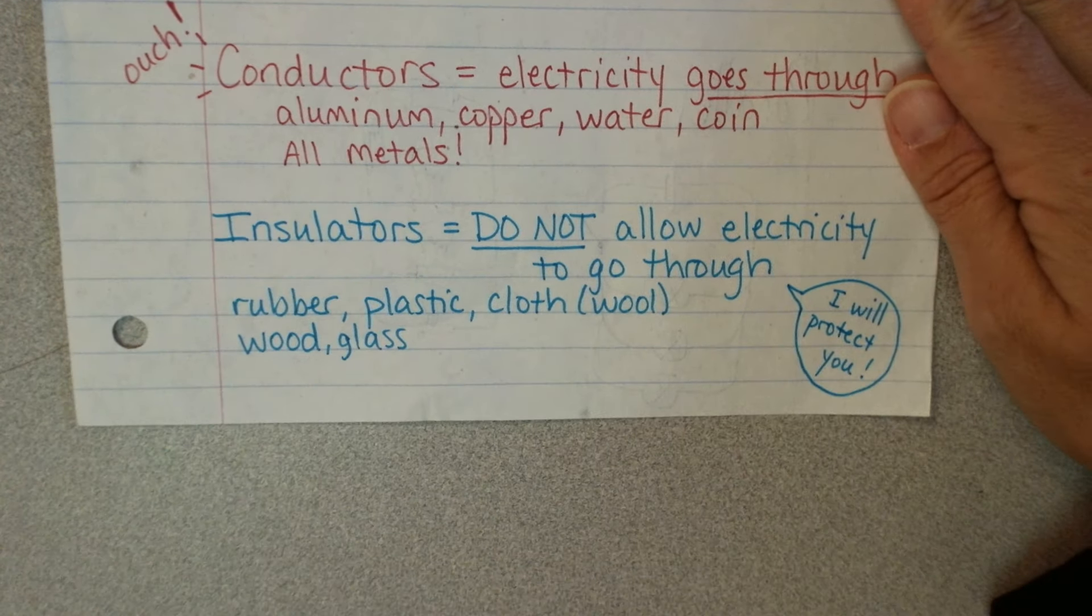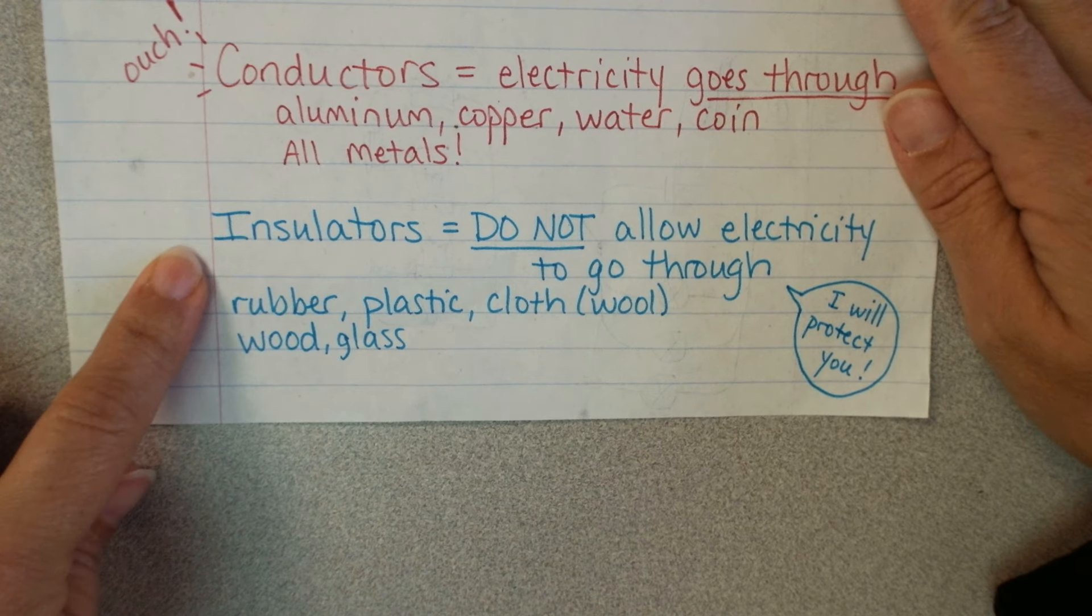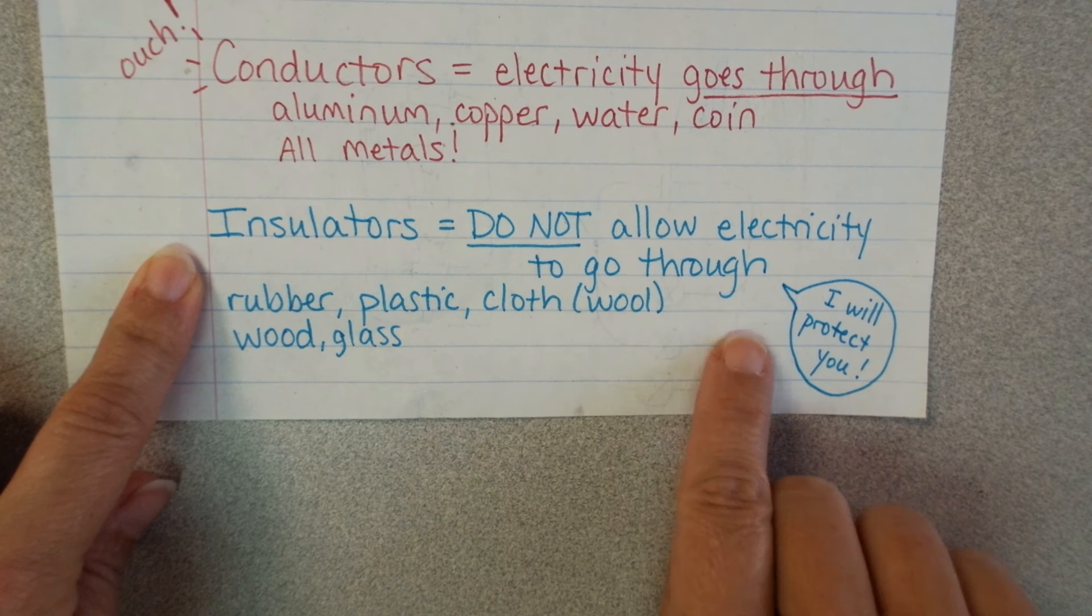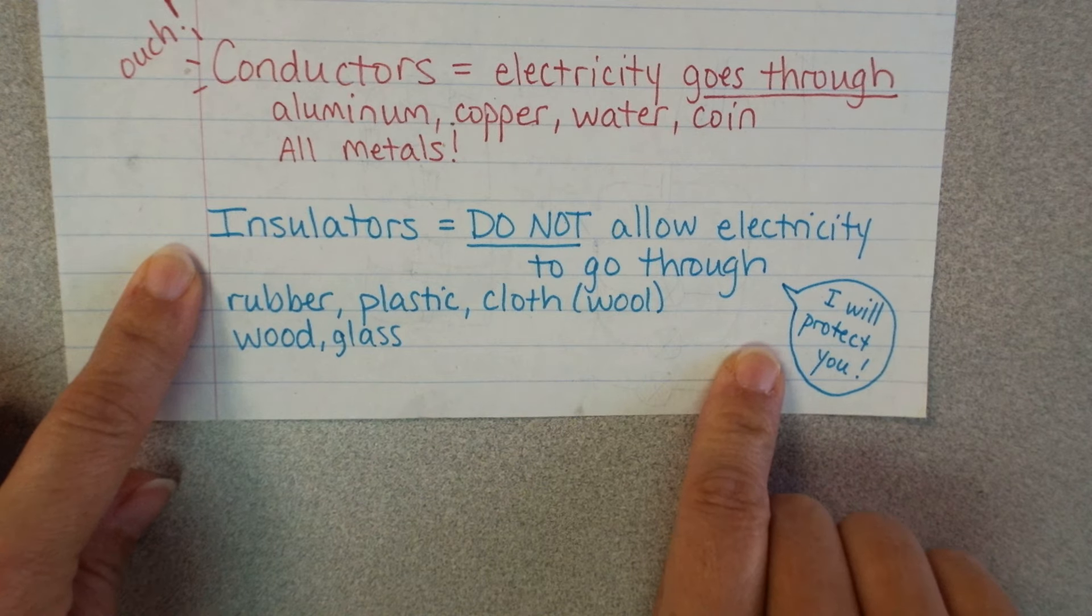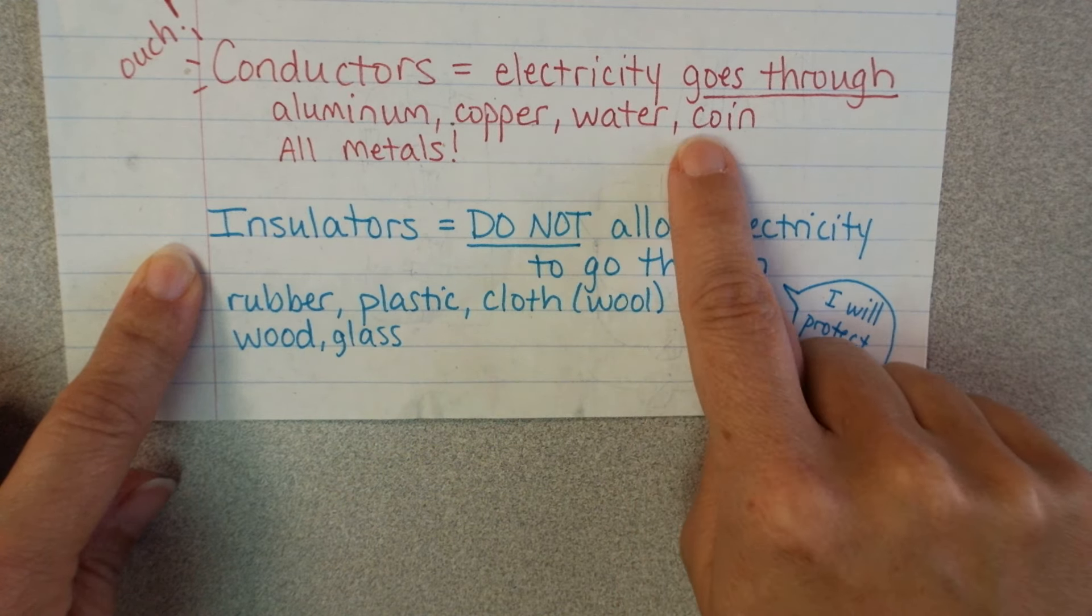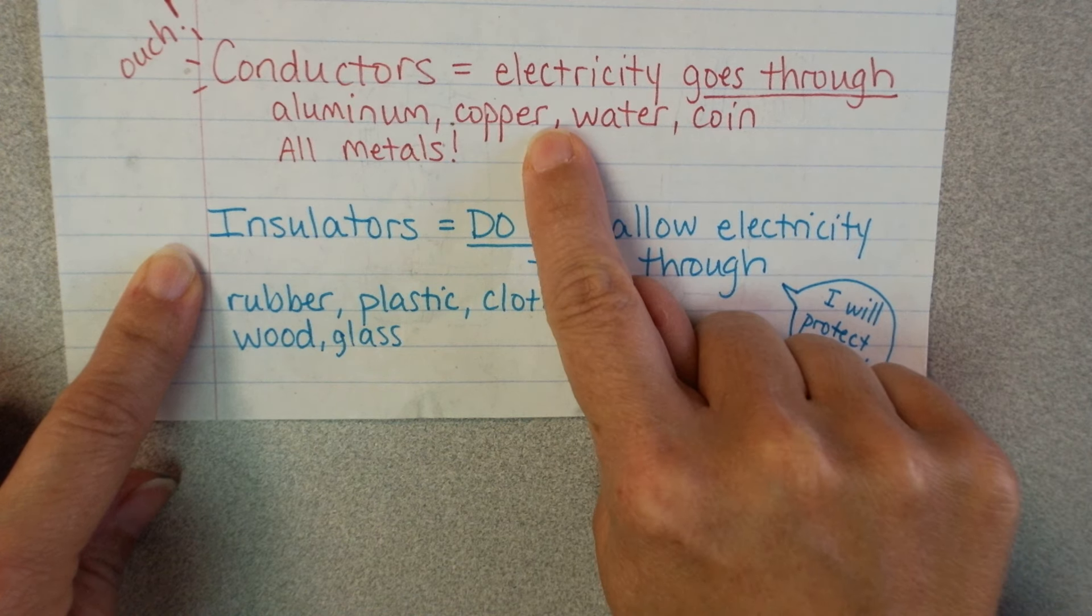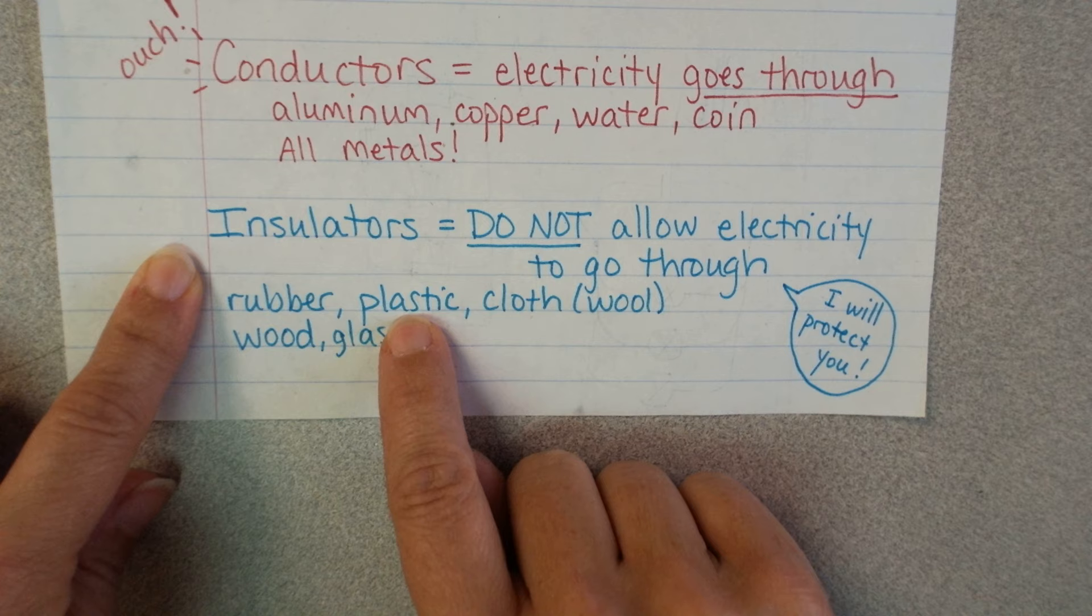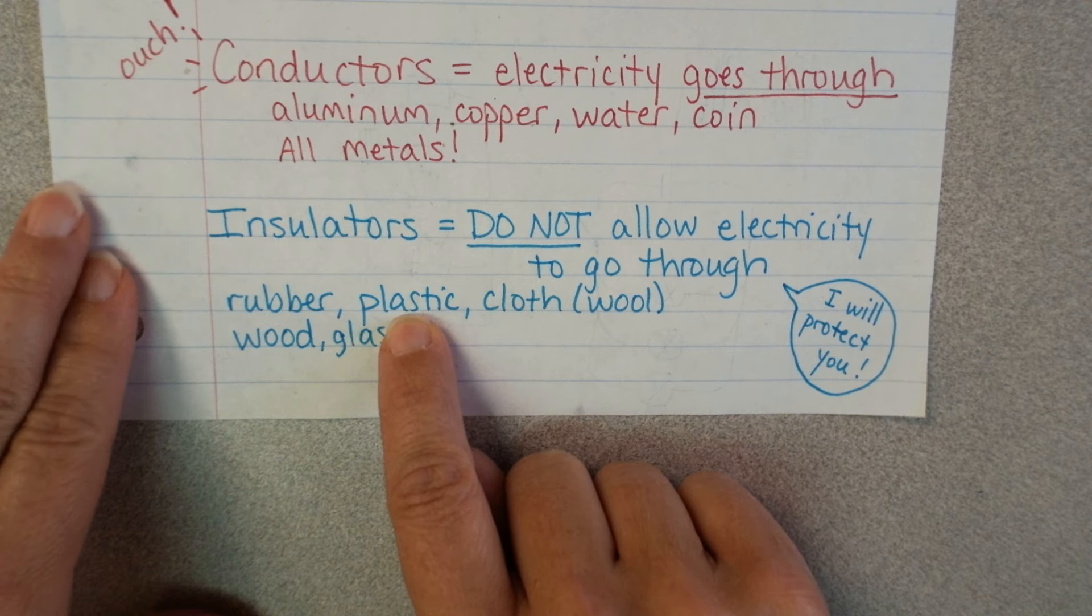And then the other side, the opposite of conductors, we know are insulators. These do not allow electricity to go through. These are the things that protect us.